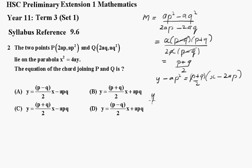Now, removing the brackets, we get (p + q)/2 x. When we multiply these out, the 2's will cancel, and I'll get minus ap(p + q). And on expanding the brackets, we get minus ap² minus apq.